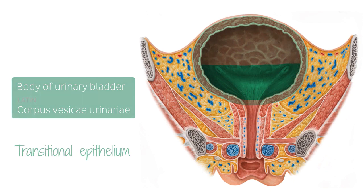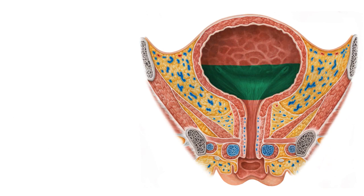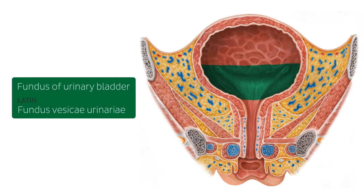Let's continue on to the next structure highlighted in green, which is known as the fundus. The fundus of the urinary bladder is basically the base of the bladder. It has the shape of an inverted triangle, faces posteriorly and inferiorly, and is formed by the posterior wall of the bladder.